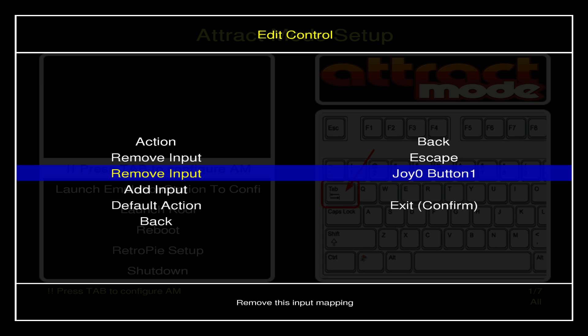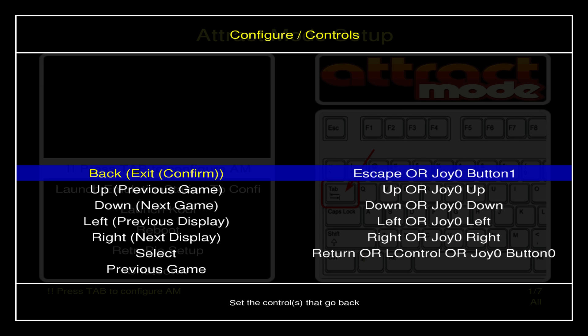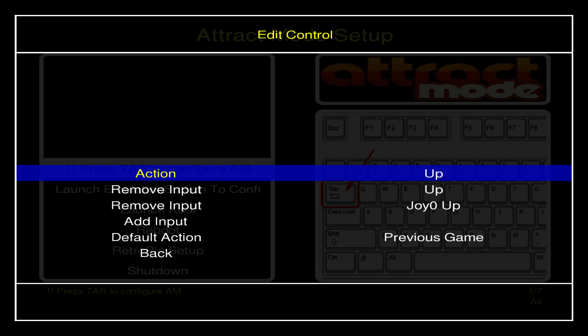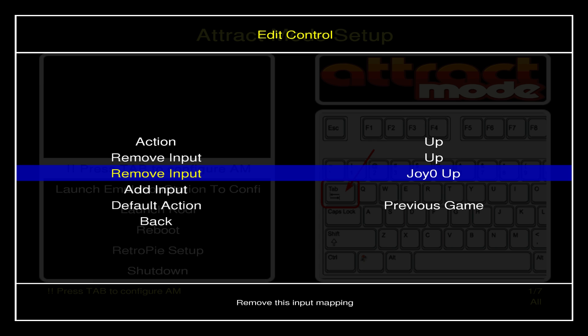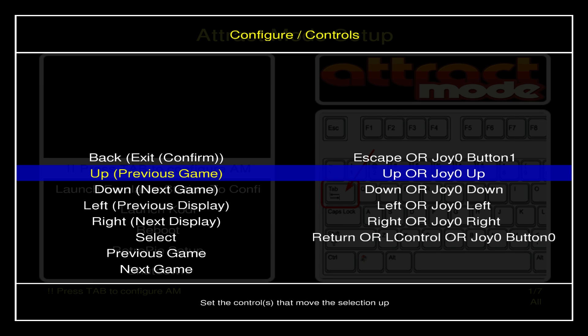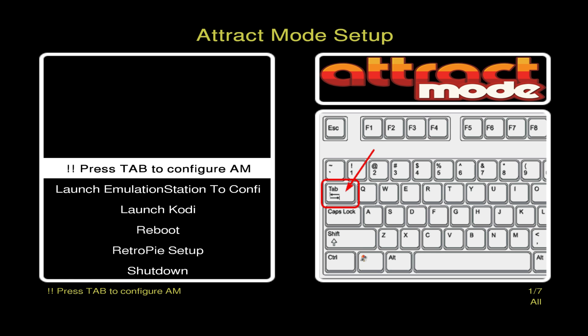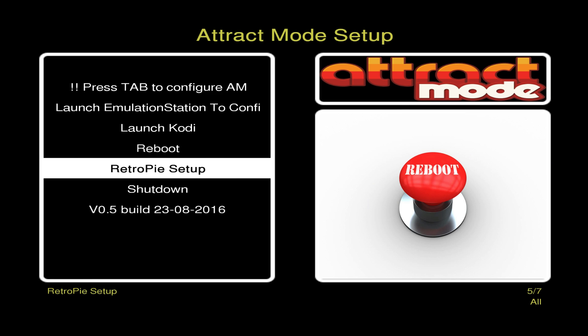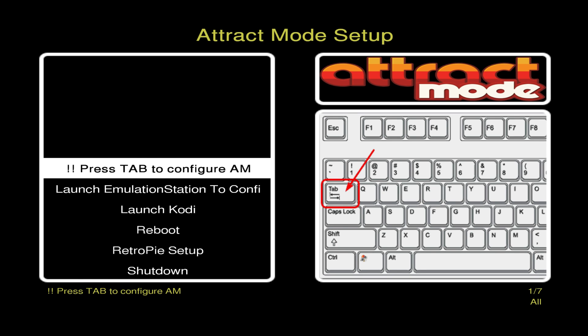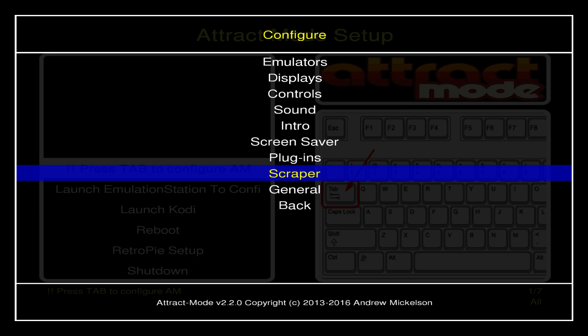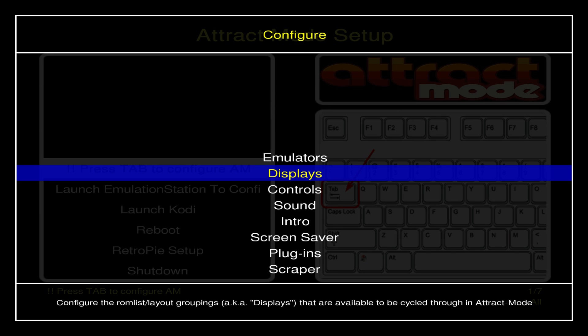For me I'm using an Xbox 360 controller and it already works. If you have something else like a PS3 controller or arcade stick, I recommend going through each control. Go to the first one — 'Back/Exit/Confirm' — press enter and remove every input that says 'joy.' After you remove all the joy inputs, go ahead and set your controller up. Go down the list and remove everything that has 'joy' in it.